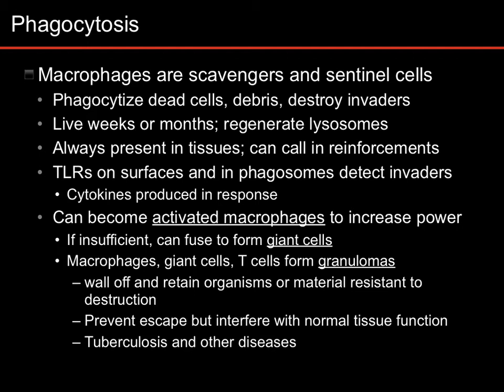Macrophages can become activated macrophages, which increase their power, and that happens due to cytokines. But they can also — a bunch of macrophages can fuse together to form a giant cell, which is kind of what it sounds like — it's a giant macrophage. And if that isn't enough, then you can have macrophages, giant cells, and T-cells all gathered together to form something called a granuloma.